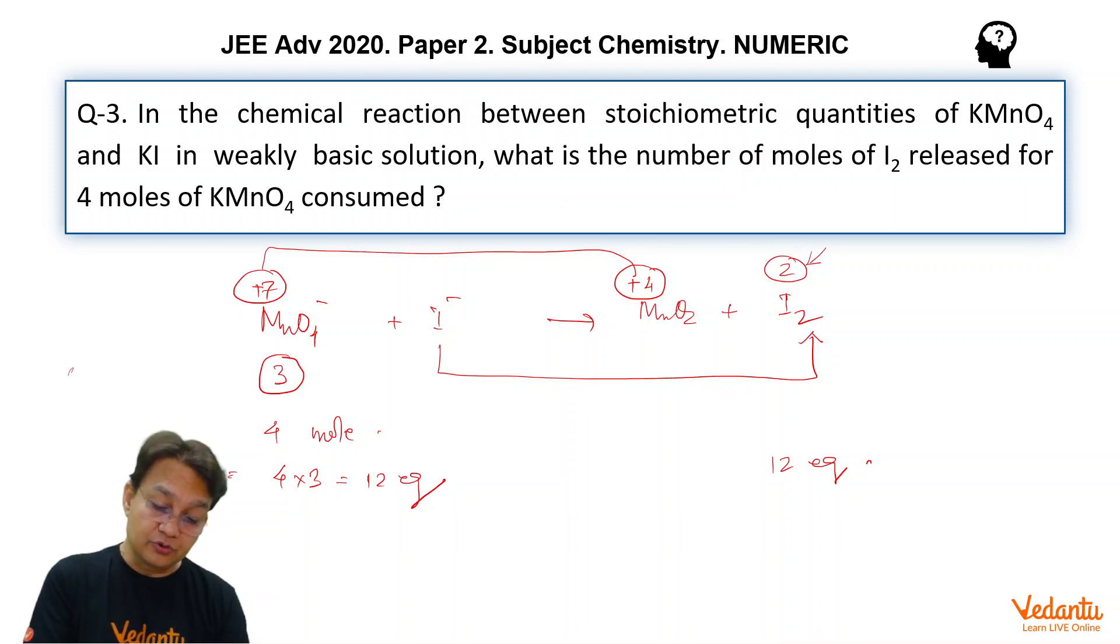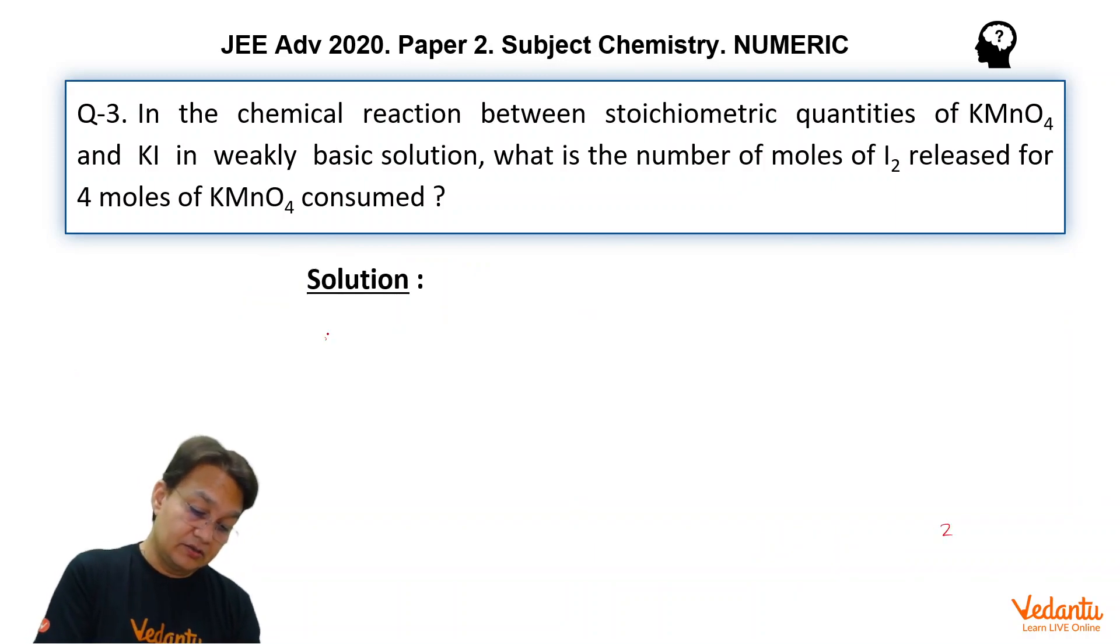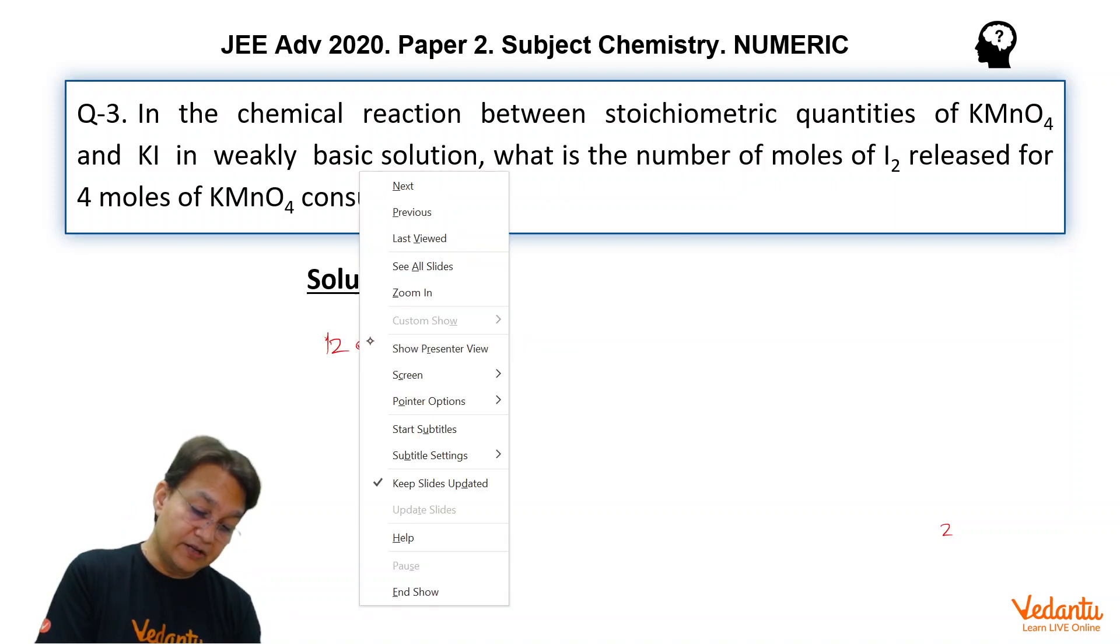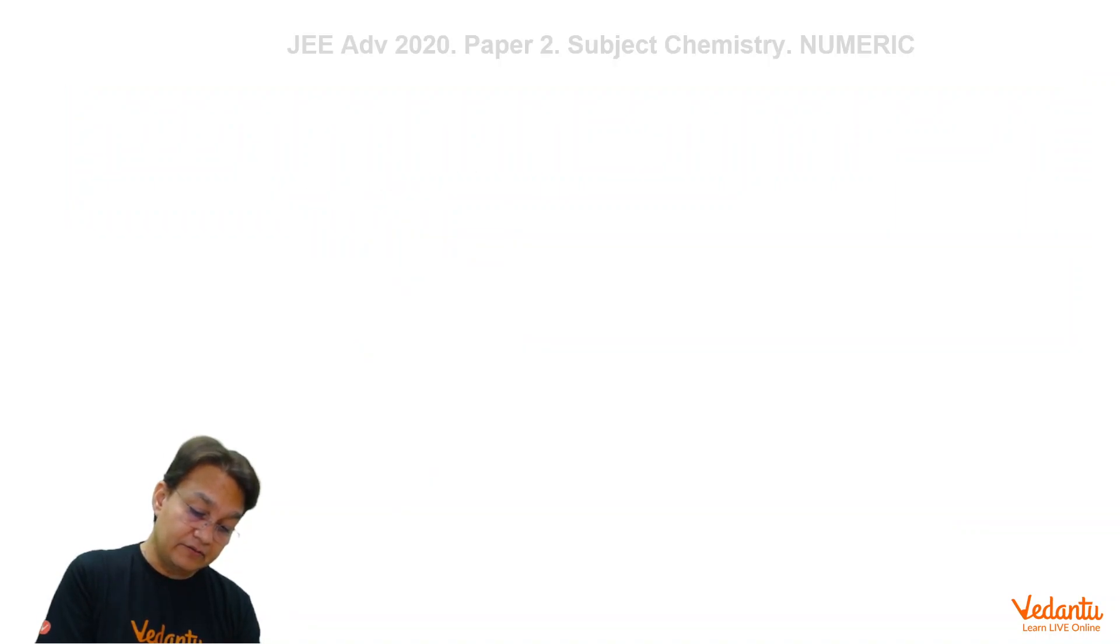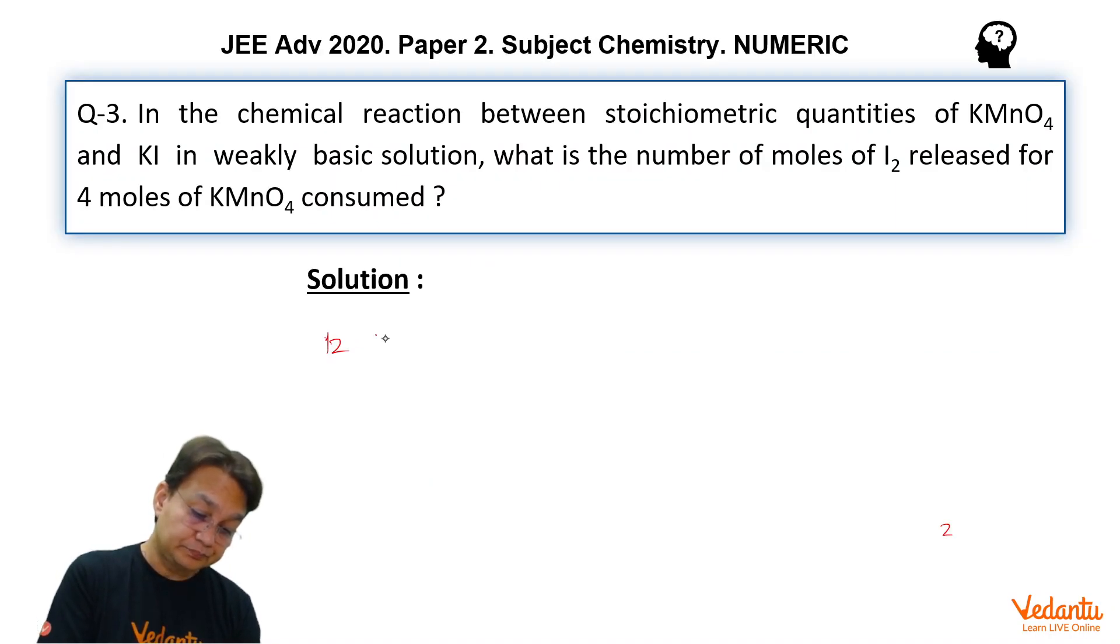So the n-factor of I2 is 2 and you can convert this into moles by using the formula number of moles equals number of equivalents divided by n-factor. So that will give you the answer 12 equivalents divided by the n-factor of this was 2 equals 6 moles.